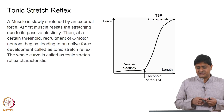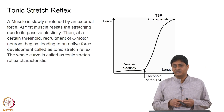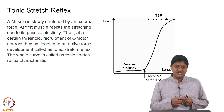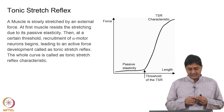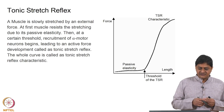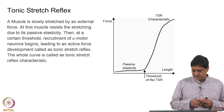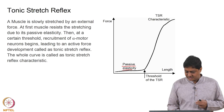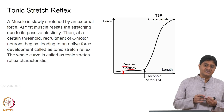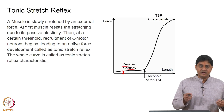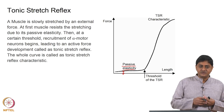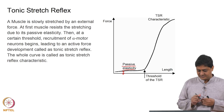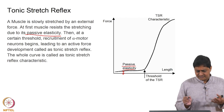If a muscle is slowly stretched — the rate at which it is stretched is relatively low — at first the resistance to this stretching happens due to passive properties. The muscle is made of contractile materials, so if I pull, the material is going to respond. There is a response due to passive material properties, or what we call passive elasticity.